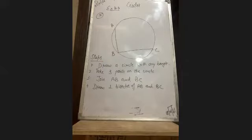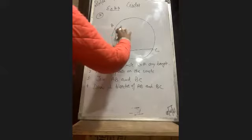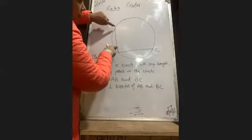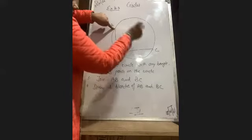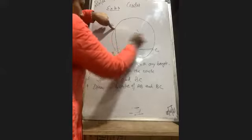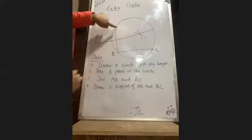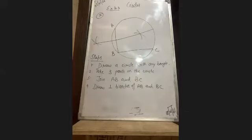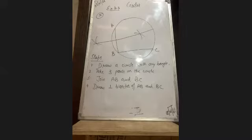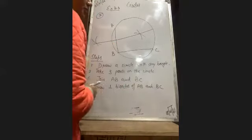We have to make the perpendicular bisector of AB and BC. Everyone knows how to make the perpendicular bisector — open the compass to a radius more than half of AB, then again open the compass to more than half of BC.